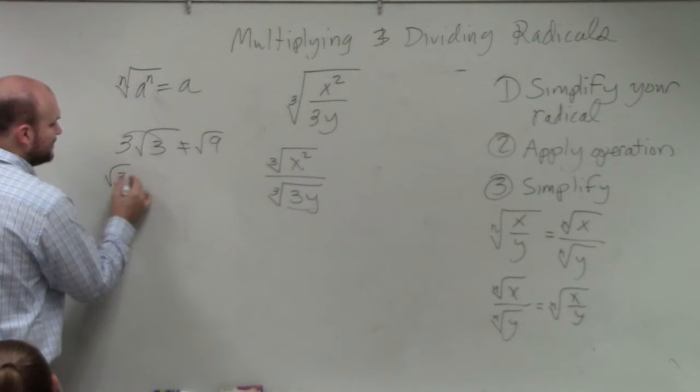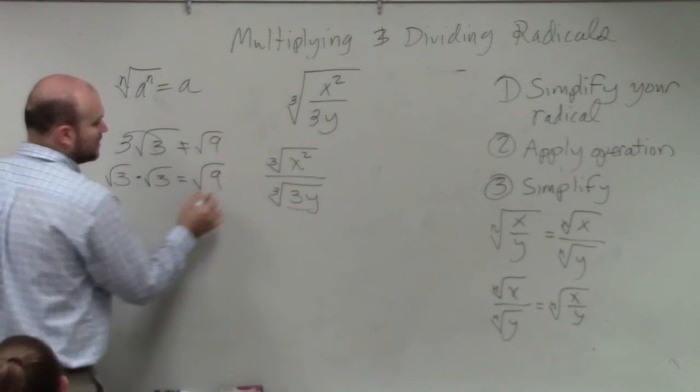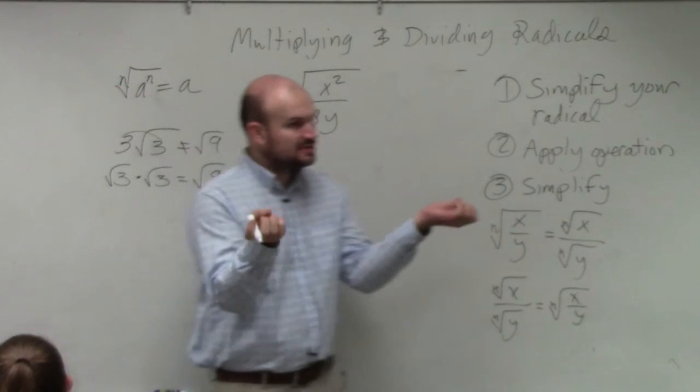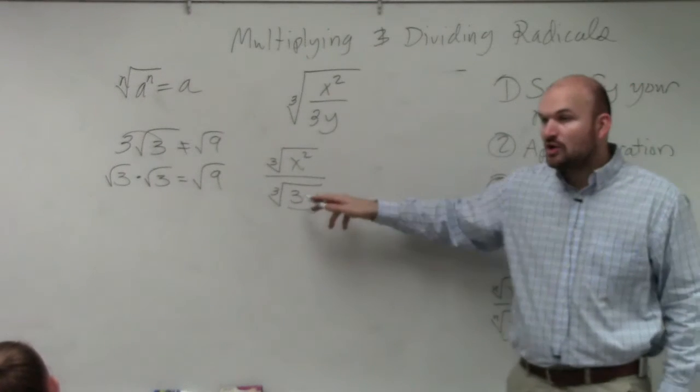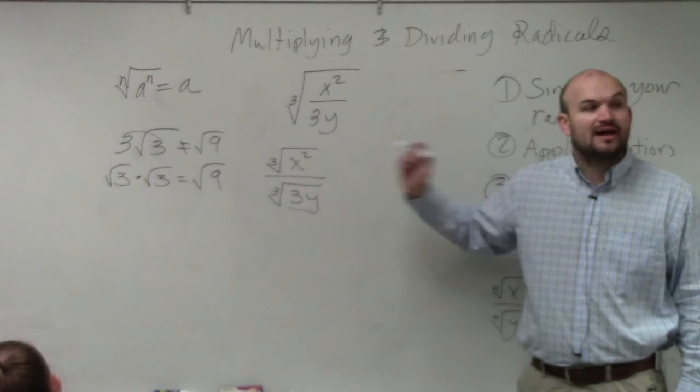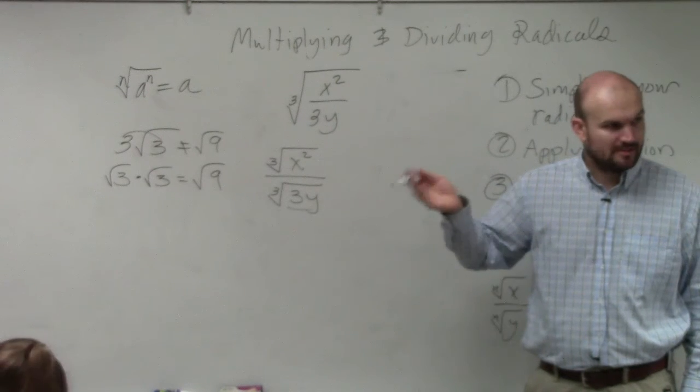However, if I had square root of 3 times the square root of 3, that equals the square root of 9. So if you have two numbers under a radical, you can multiply them. So I need to get 3y to be 3y cubed, right? Yes? Does everybody agree with me?